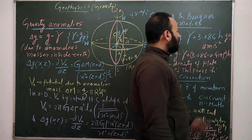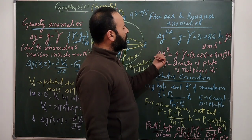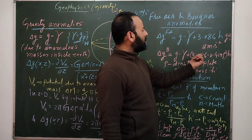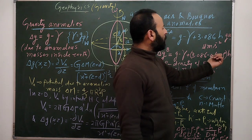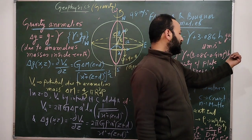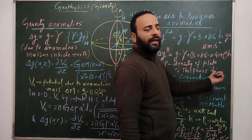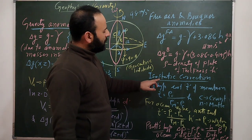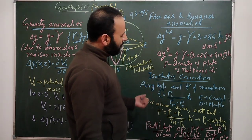For the Bouguer correction, the formula is: 3.086 minus 0.419·ρ·h, where ρ is the density of the slab (palette) of thickness h. There is also an isostatic correction, for which there are two theories.